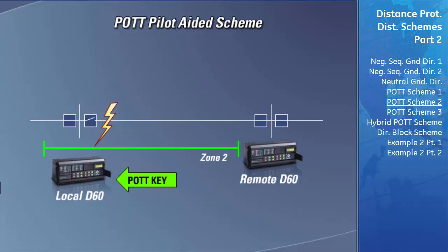Therefore, tripping of the remote breaker will not occur until zone 2 of that remote relay has timed out. The additional logic in the POTT scheme, called the echo function, works as follows: the local D60 first detects that its own breaker is open. If its local breaker is open and it receives a POTT key from the remote D60, it will send the POTT key sequence it received directly back to the remote relay. The local D60 is telling the remote D60 that it is okay to trip because the local end of the line is already open, ensuring the system will not become unstable.